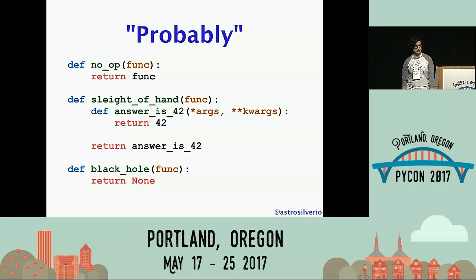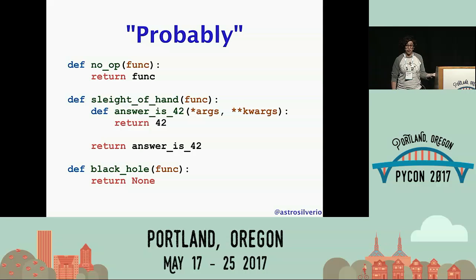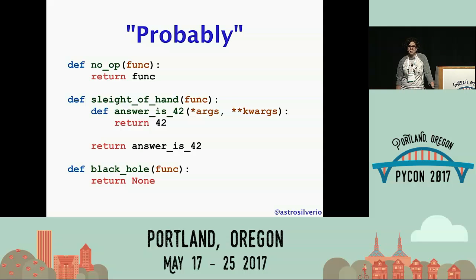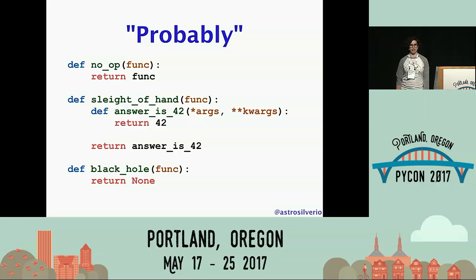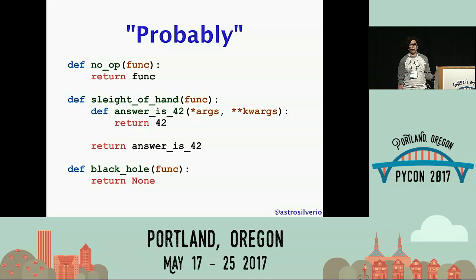A decorator doesn't have to actually call the function it decorates — I could use a sleight_of_hand decorator to just replace whatever I decorate with something that always returns 42. Don't know why I'd want to do that, but I could. And finally, a decorator doesn't actually have to return a function in order to compile. In theory, I could decorate something with a black_hole that just returns None — the code will compile, but if I try to call foo, I'll get a TypeError because None isn't callable. None of these are particularly useful unless your main goal is having bad ideas, but they are all legal decorators according to Python's grammar.